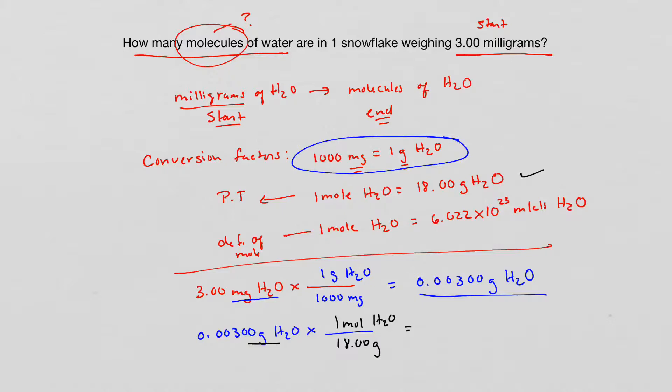If I do just this step, I'm going to take my 0.00300 divided by 18. I'm going to use scientific notation now. I'm going to get 1.67 times 10 to the negative 4. And that's moles of H2O.